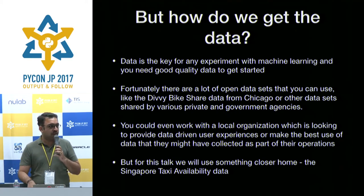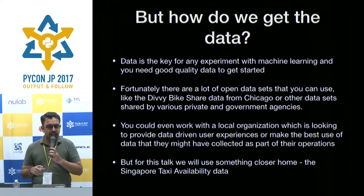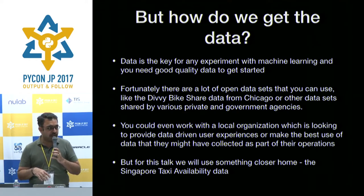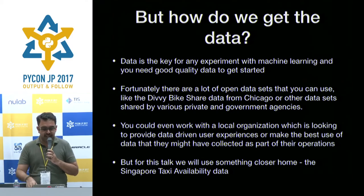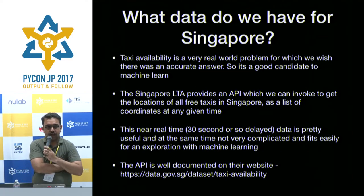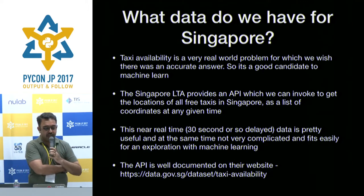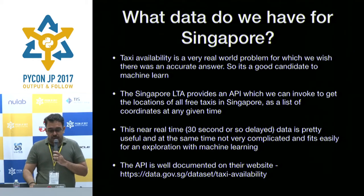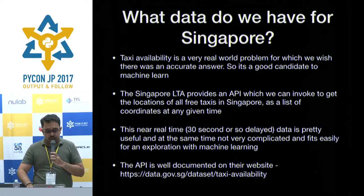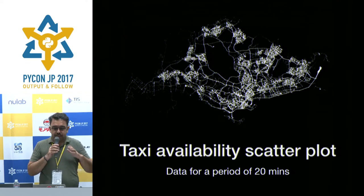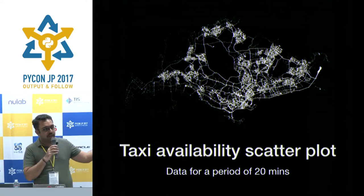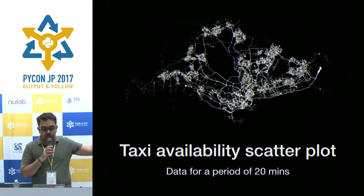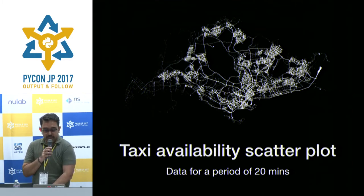You have a lot of open data APIs. You can use Chicago bike sharing information, and there's cab availability data from other cities as well. But I'm using something from Singapore. The Singapore government has a real-time API where you can get the current location of all the free cabs in the city at any given moment. It's updated about once every half minute and gives you a list of latitude and longitude for every free cab in Singapore. With just 20 minutes of data, you could almost plot the entire road network of Singapore.